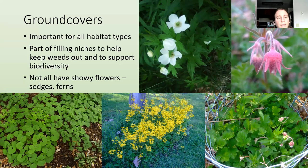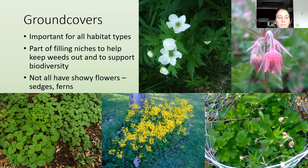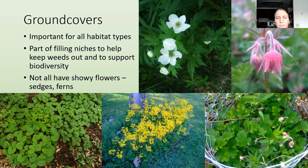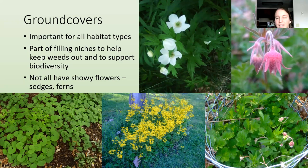Ground covers are important for all habitat types — they're part of filling in and making sure all the niches are filled to help keep weeds out and support biodiversity. They're really beneficial even if they're not showy or are low to the ground. Canada anemone is very pretty but very aggressive, so make sure it has enough space to grow. Prairie smoke is a nice ground cover for drier soil, and water avens — same genus — grows in wet soil. Both are good ground covers.